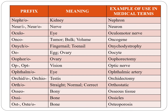Nephro indicates kidney, as in nephron. Neuro indicates nerve, as in neuron. Oculo indicates eye, as in oculomotor nerve. Onco indicates tumor, as in oncogene — sometimes it indicates bulk or volume. Onycho indicates fingernail or toenail, for example onychodystrophy.